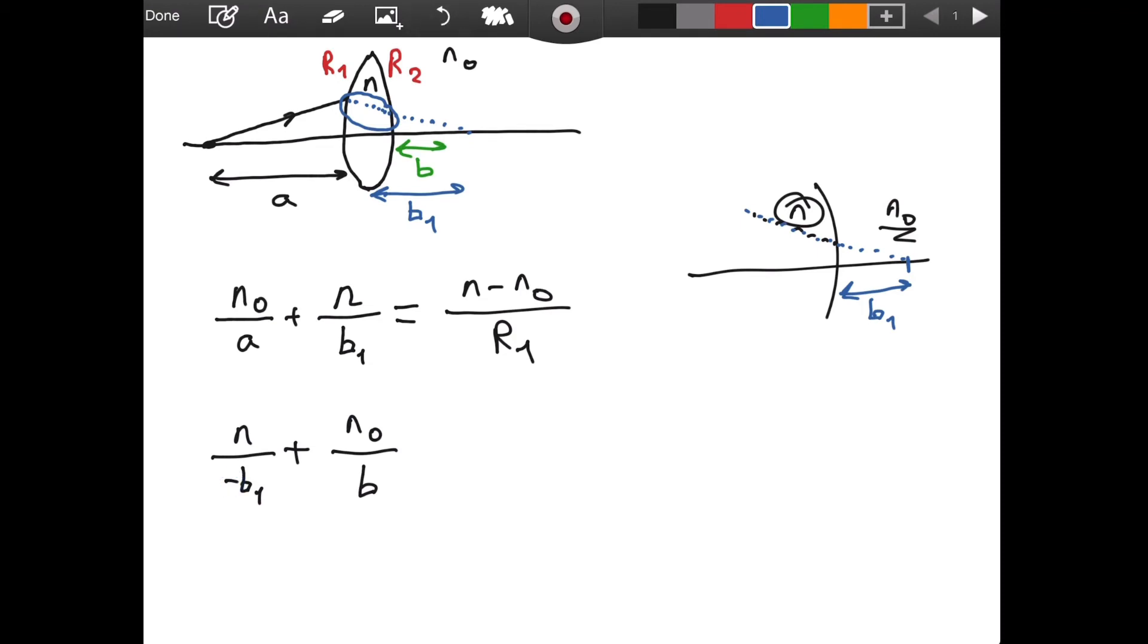Since the light beam doesn't really intersect the principal axis, its extension only. Only the extension intersects the principal axis. So, we put a negative sign in front. That is very important for our derivation. So, I hope it makes total sense. And, if it doesn't, you can always ask your questions in the comment section.